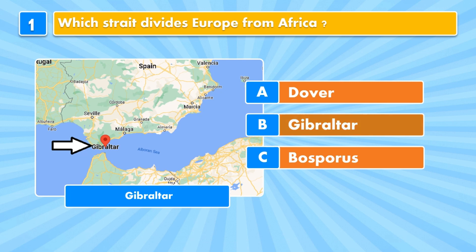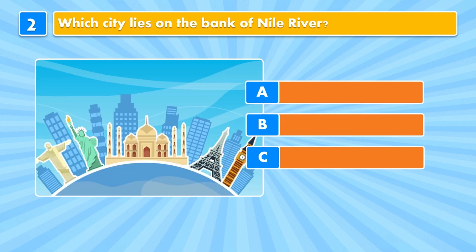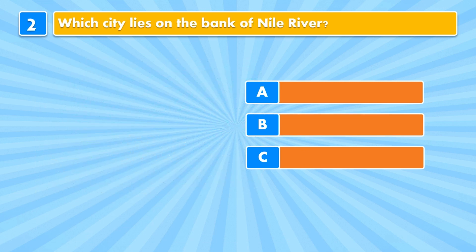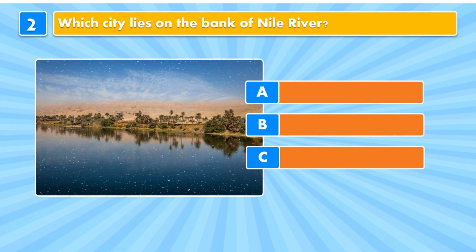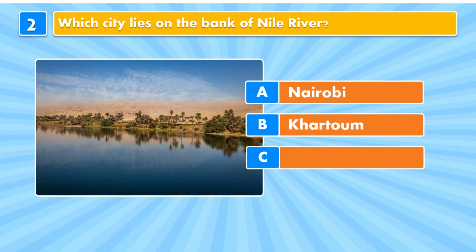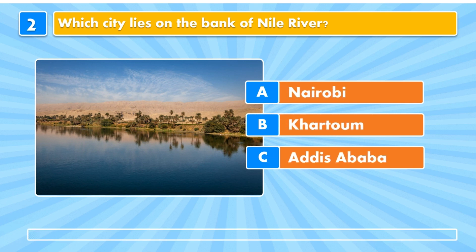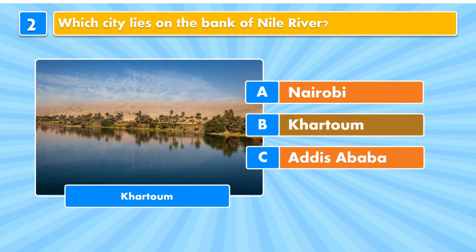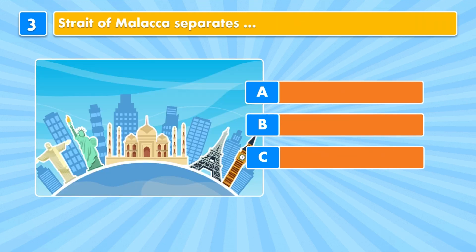It's Gibraltar. Question two: which city lies on the bank of the Nile River? Nairobi, Khartoum, Addis Ababa. Answer: Khartoum.